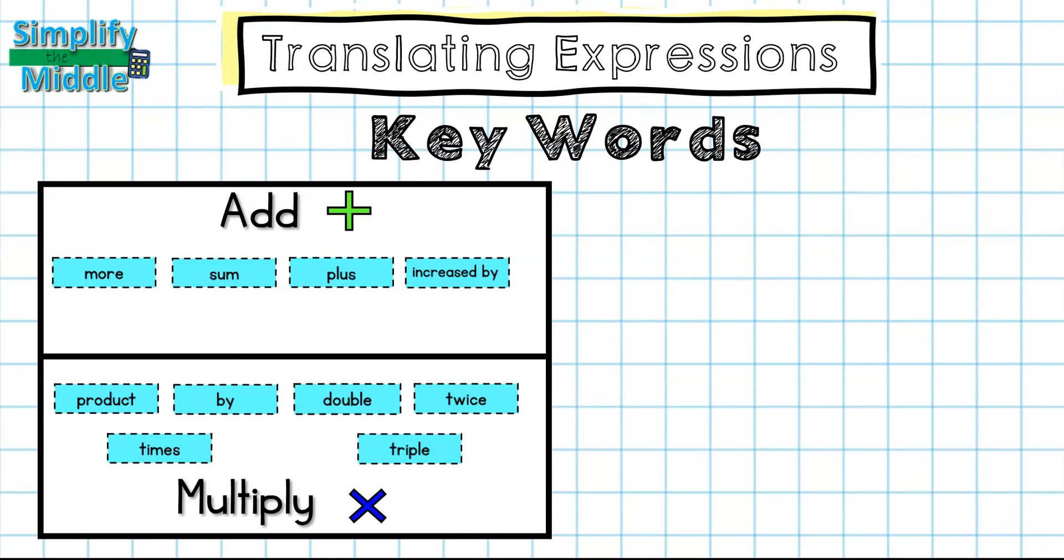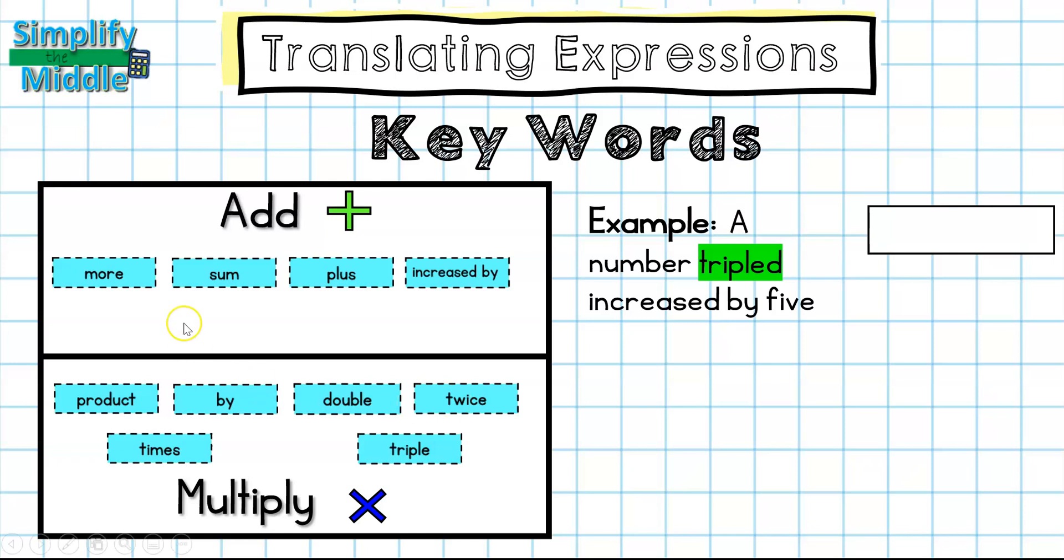Let's look at a few examples that have more than one operation. Here we have a number tripled increased by five. We have the word tripled, which I see over here under the multiply. Tripled means to multiply by three. Because it says a number, that means our variable. So we have n multiplied by three. Whenever you're multiplying a number and a variable, you always want to write the number first. So I'm going to write 3n. And three is my coefficient. Whenever I have a coefficient, I know that means multiply by the variable. Next, I'm going to be increasing it by five. So increased by is here in the addition column. So I'm just going to write plus five.